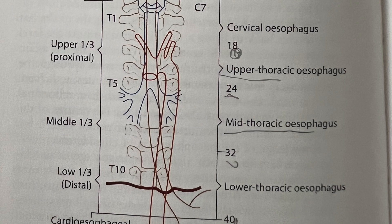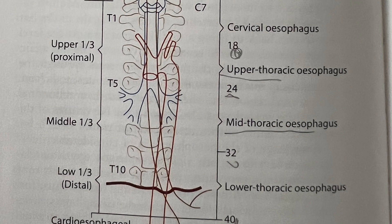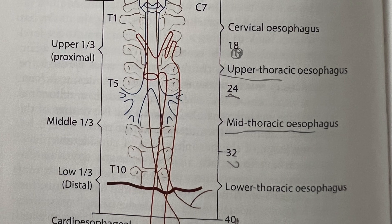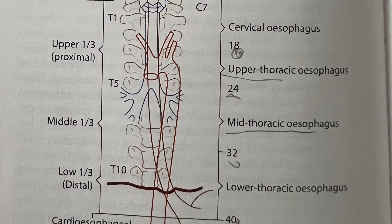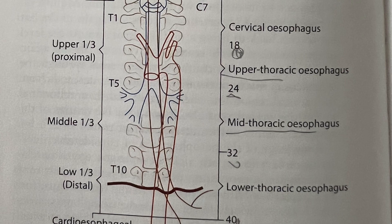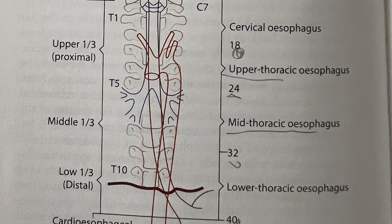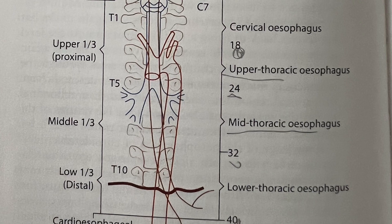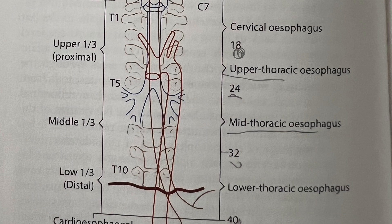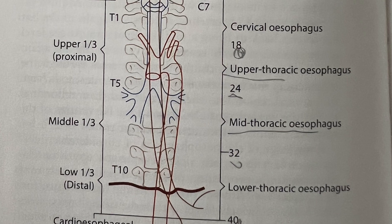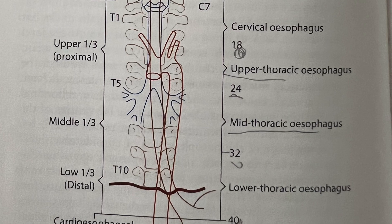Approximately 15 to 18 cm from the incisor is the first constriction of the esophagus. The second constriction is formed when the esophagus is crossed over by the arch of the aorta, approximately 22 to 24 cm from the incisor teeth. This is immediately followed by a further constriction about 27 to 30 cm from the upper incisor, caused by the left main bronchus crossing over it.